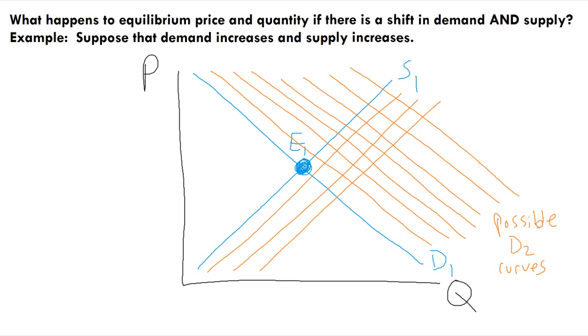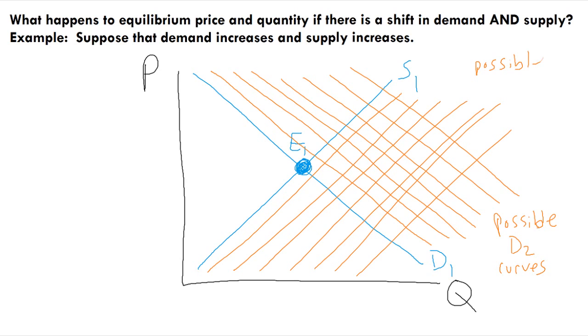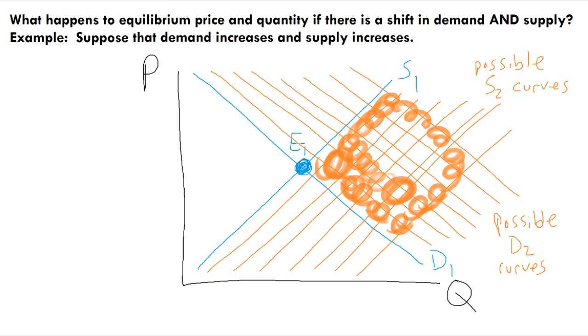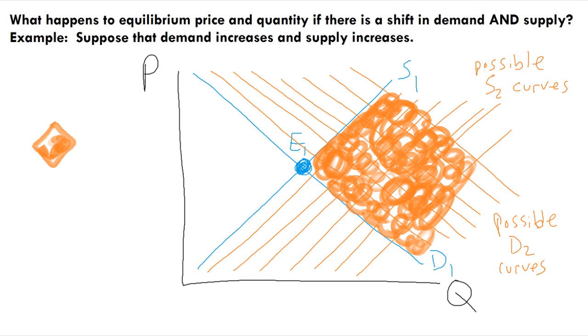And we also now draw many different possible S2 supply curves. Once again, it could be a small, medium, or large shift. And now any of these new red intersections could be the location of E2. So we can shade in the entire area.